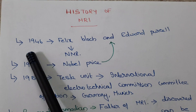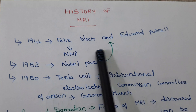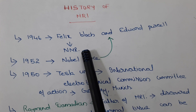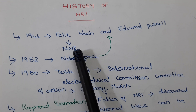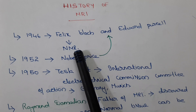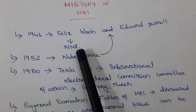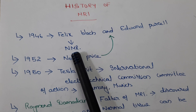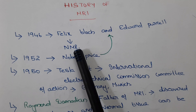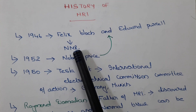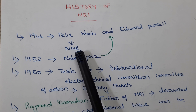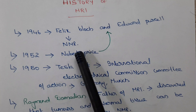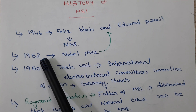In the year 1946, Felix Bloch and Edward Purcell discovered the phenomenon of NMR — nuclear magnetic resonance. NMR means the nuclei of an atom show a small magnetic property when subjected to a strong external magnetic field. For their work they received the Nobel Prize in the year 1952.